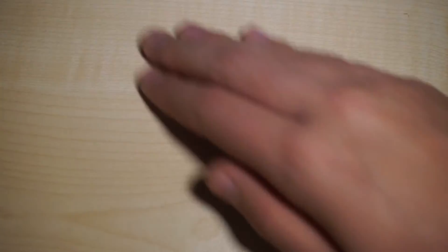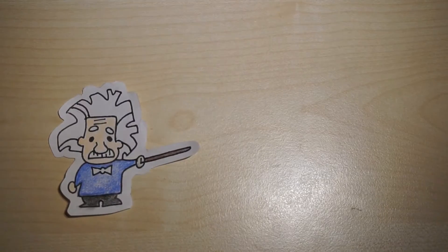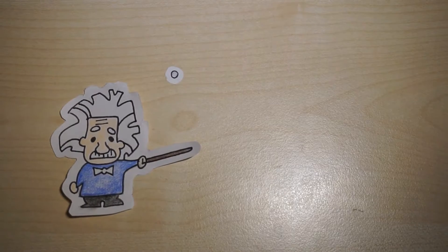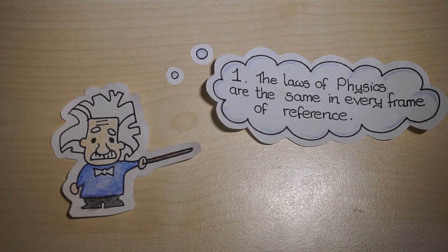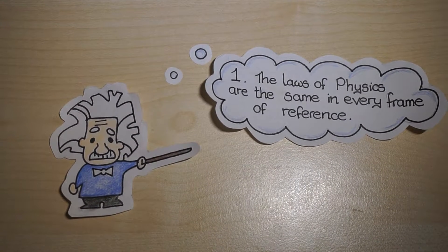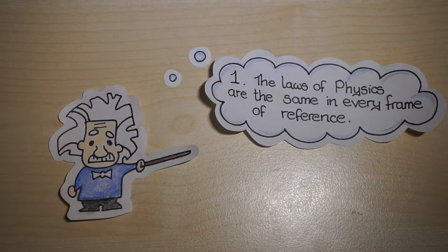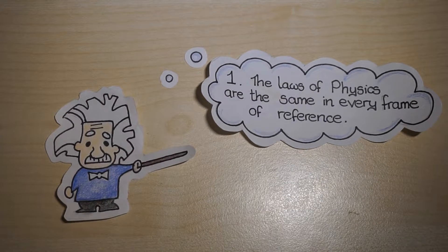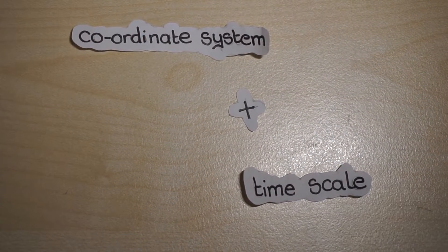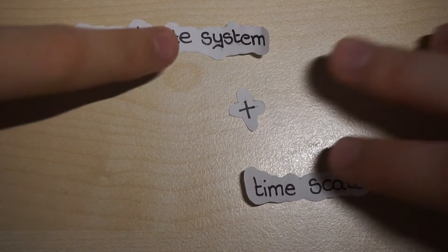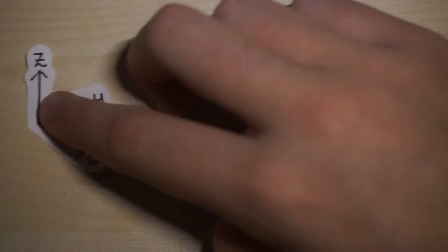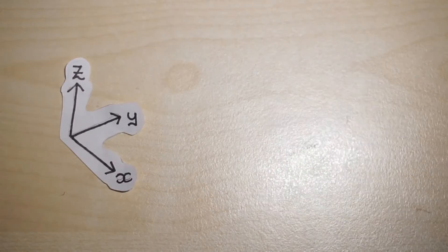So what were these two postulates? The first is that the laws of physics are the same in every frame of reference. To understand this, we need to know what a frame of reference is. A frame of reference is a coordinate system plus a timescale — you might use the Cartesian basis: x, y, z, and time t.